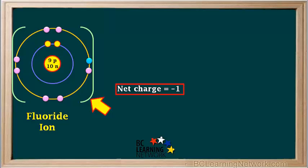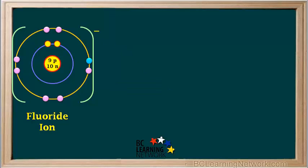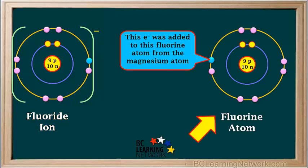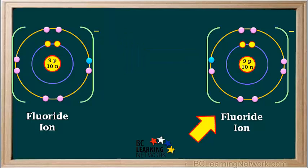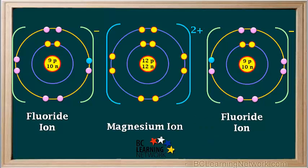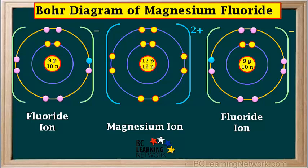Since it is an ion, we put it in square brackets and write the net charge on the top right. For a negative one charge, chemists usually just write the negative sign and leave out the number one. We can do the same thing to the fluorine atom on the right, which had gained magnesium's other valence electron, displaying it as a fluoride ion with a square bracket and a negative charge. We'll bring back the magnesium ion. Now we have the finished Bohr diagram, which shows the ionic compound magnesium fluoride.